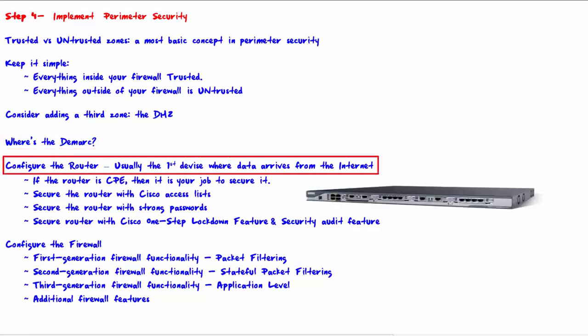Configure the router — usually it's the first device where data arrives from the internet. If a packet from the untrusted network arrives, the first device it typically hits is the router at the perimeter. Depending upon the type of internet connection — whether it's T1, cable, etc. — the router may be CPE or it may be owned by the ISP. If the router is CPE, then it is your job to secure it.